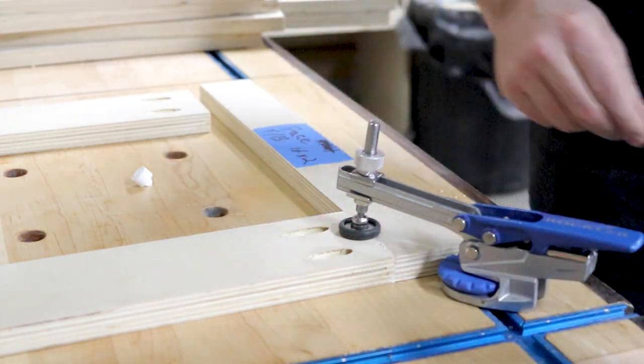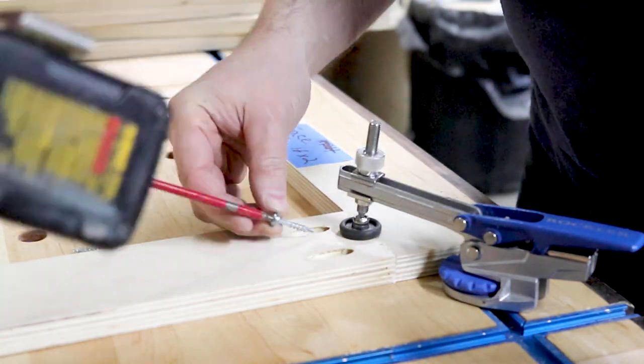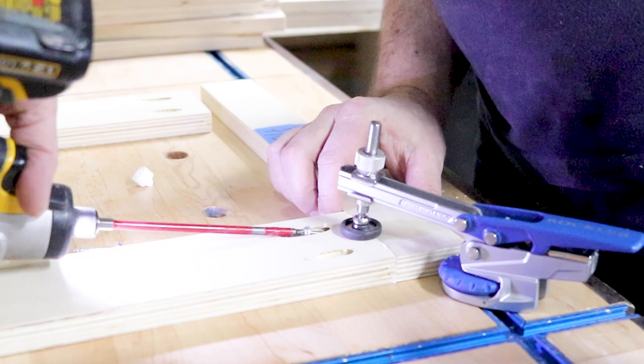Pocket holes tend to move around as you're working with them, so I find clamping everything down just makes it that much easier.